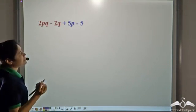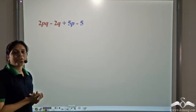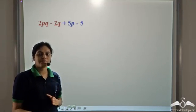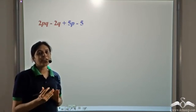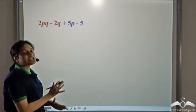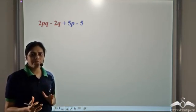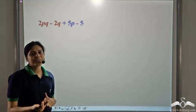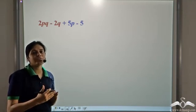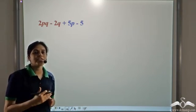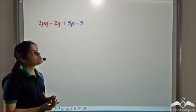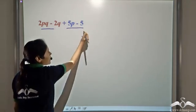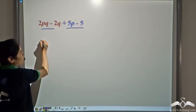So whenever we have an expression where we cannot find a single common factor among all the terms, we try to divide the expression into groups such that each group has a common factor. There is no specific method of doing it — we have to try and see how to divide it into different groups and whether we can find a common factor among the groups. So for this expression, we take these two terms and these two terms.